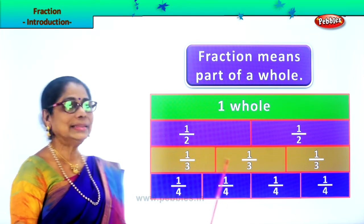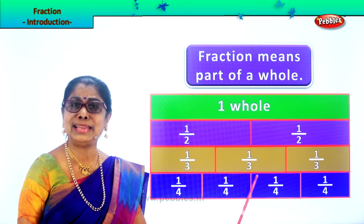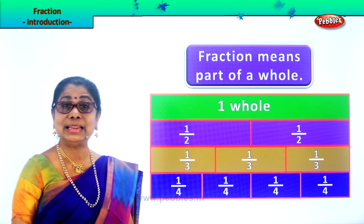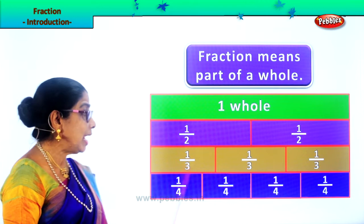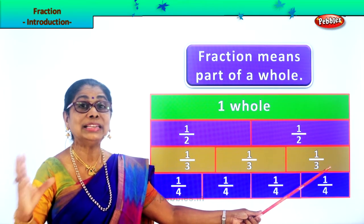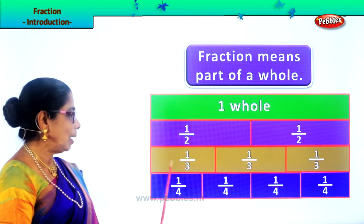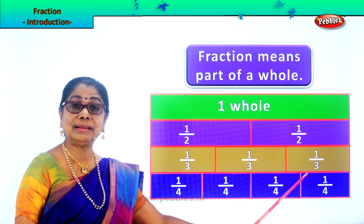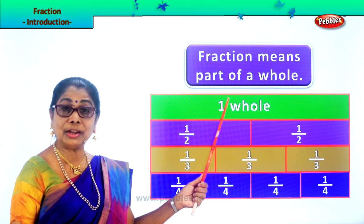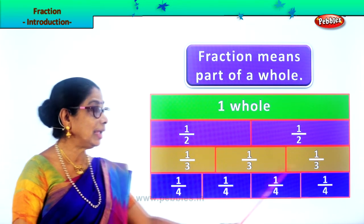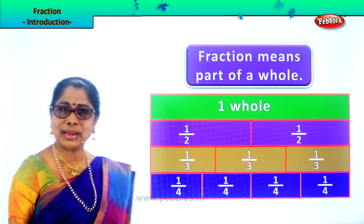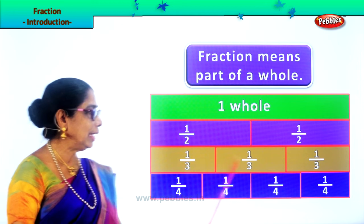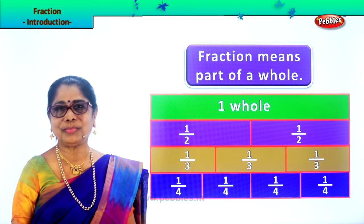Now, grandma says: what about Daisy? So she takes out another whole chocolate. Daisy, Peter, and John share the chocolate — divide the whole chocolate into three parts. One by three, one by three, one by three. Grandma makes three correct shares of the whole chocolate and calls Daisy, Peter, and John. Each of you take one third — dividing the whole chocolate into three pieces. So Daisy, Peter, and John all get one correct slab each.